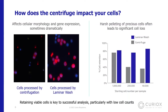Microscopy images illustrate the centrifuge's impact on cells. Cells processed by centrifugation appear crushed and smaller, with fewer cells remaining on the plate and weaker fluorescent signal. Cells processed by laminar wash show much more cells remaining, much more intact morphology — they look happier and healthier — and the fluorescent signal is also stronger.